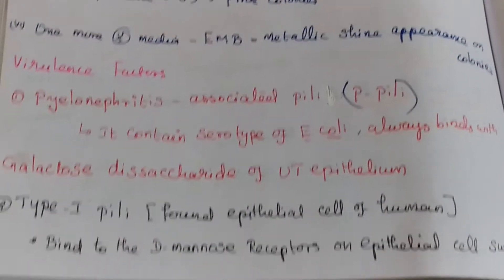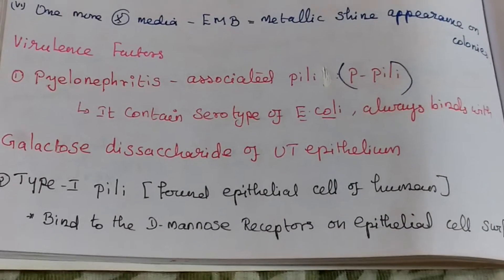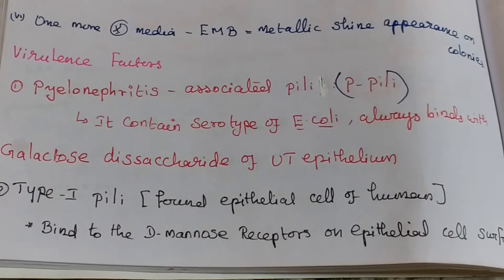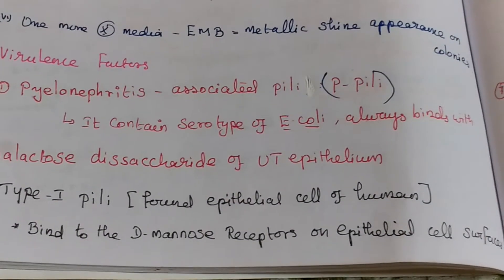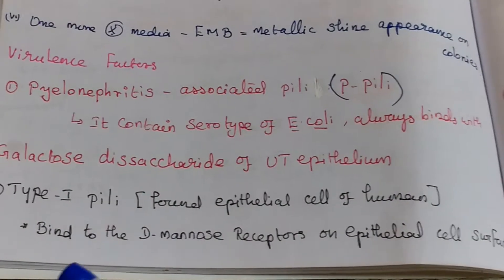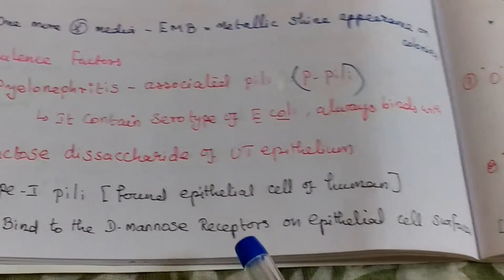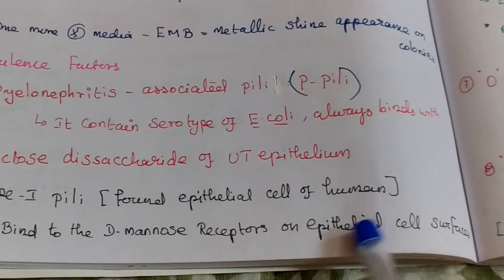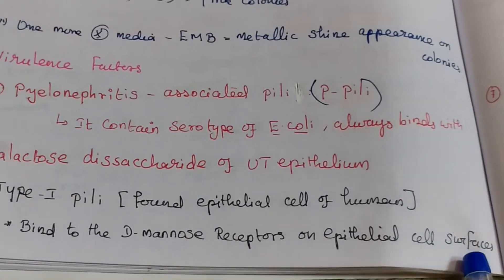The second virulence factor is type 1 pili. This is found on epithelial cells of humans. Type 1 pili always bind to the D-mannose receptor on the epithelial cell surface.